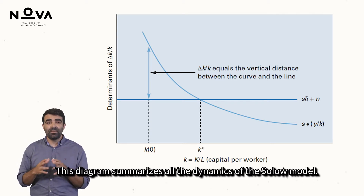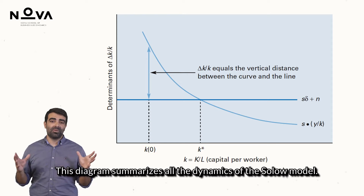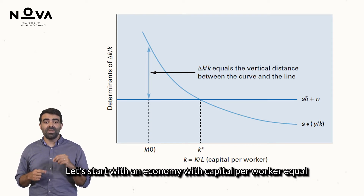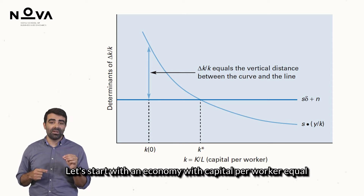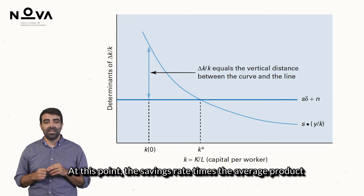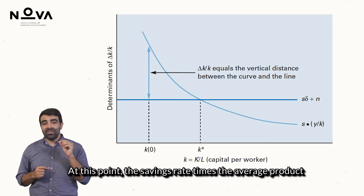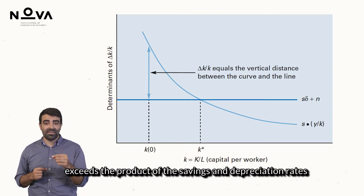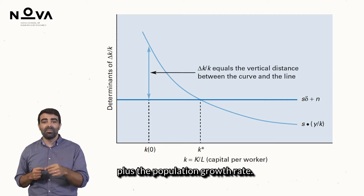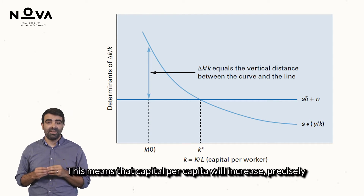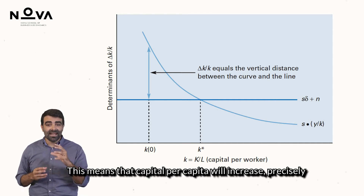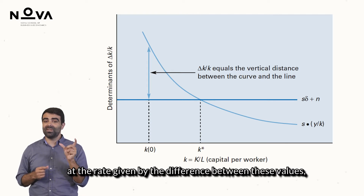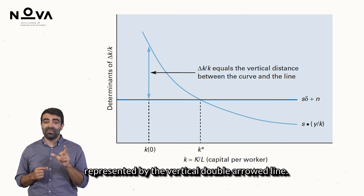This diagram summarizes all the dynamics of the Solow model. Let's start with an economy with capital per worker equal to K0. At this point, the savings rate times the average product exceeds the product of the savings and depreciation rates plus the population growth rate. This means that capital per capita will increase, precisely at the rate given by the difference between these values, represented by the vertical double-arrow line.